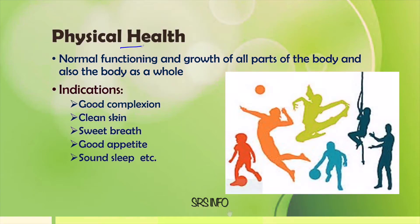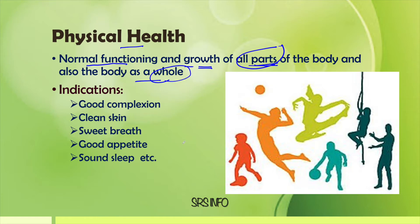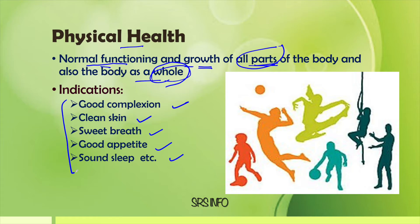The first dimension is physical health. Physical health means the normal functioning and growth of all parts of the body and also the body as a whole. In many cases, the height may be very less, or the head grows in an abnormal way. Both the growth of all parts of the body and the body as a whole are very important. Indications of physical health include good complexion, clean skin, sweet breath, good appetite, sound sleep, etc.